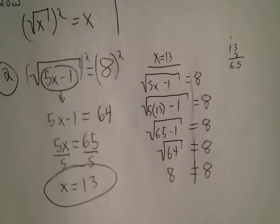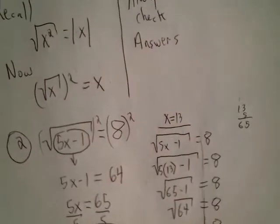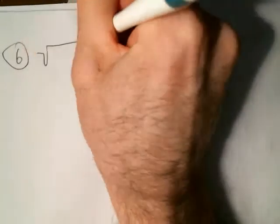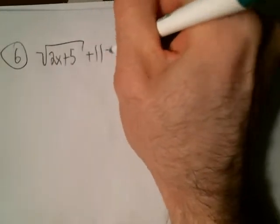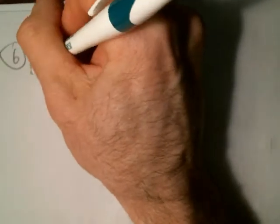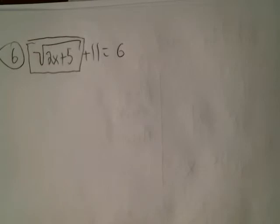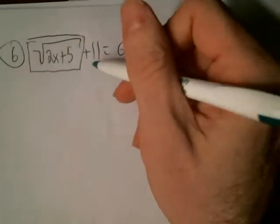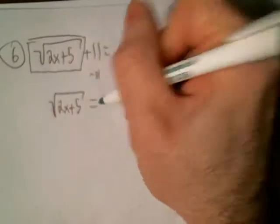Let's keep looking at variations on this theme. Here's number 6. We have the square root of 2x plus 5 plus 11 equals 6. We could square both sides, but we'd end up having to FOIL, which is a headache. A standard rule of thumb is to isolate the radical when possible. So move the 11 to the other side, and now we can square both sides.